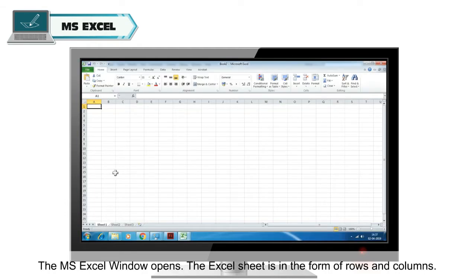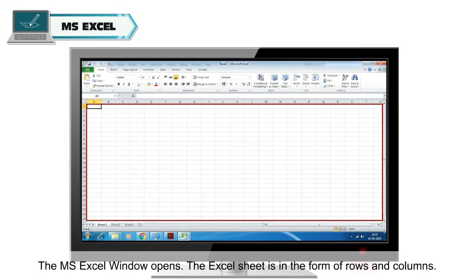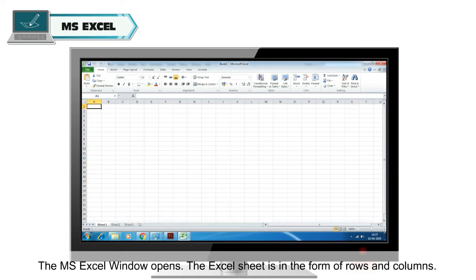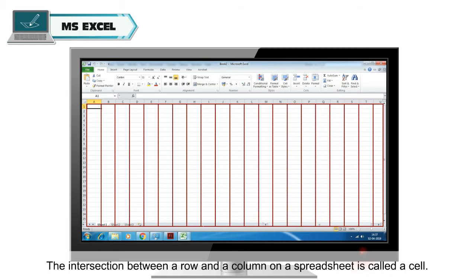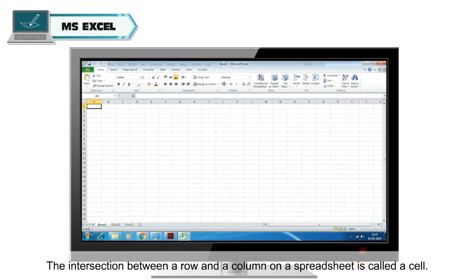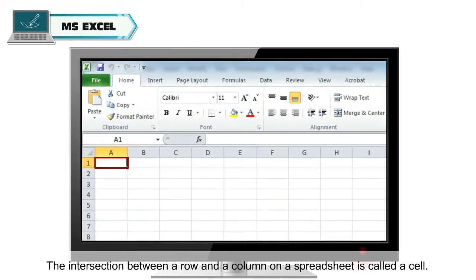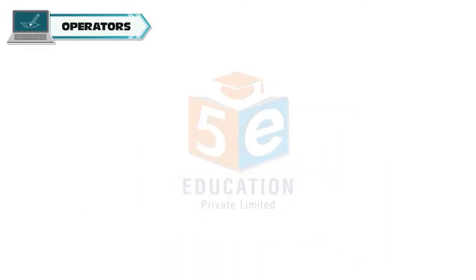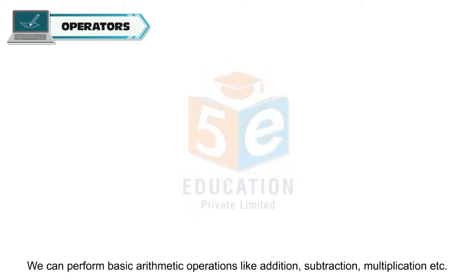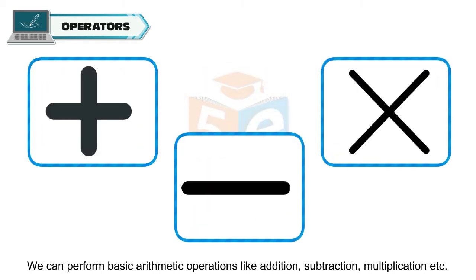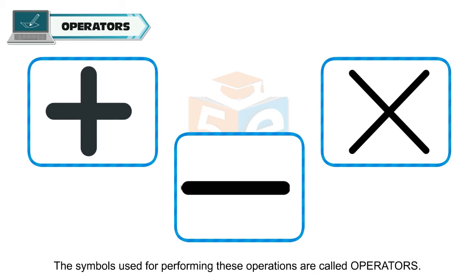The MS Excel window opens. The Excel sheet is in the form of rows and columns. Rows run horizontally while columns run vertically. The intersection between a row and a column on a spreadsheet is called a cell. We can perform basic arithmetic operations like addition, subtraction, multiplication, etc. The symbols used for performing these operations are called operators.